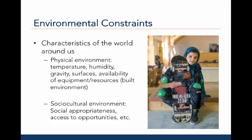Environmental constraints are the characteristics of the world around us. There are two types. Physical environmental constraints include factors such as temperature, humidity, gravity, types of surfaces, availability of equipment, or resources including the built environment. For example, during the summer in Auburn, the physical environment makes it difficult to walk on campus — it's hot, humid, and often the sidewalks end without any reason.